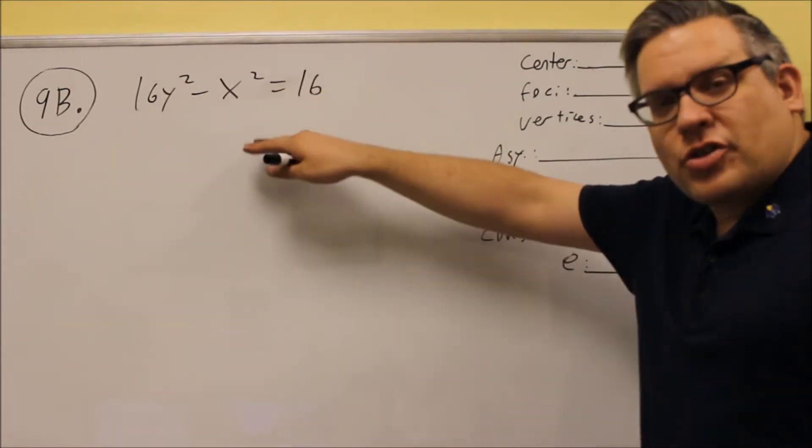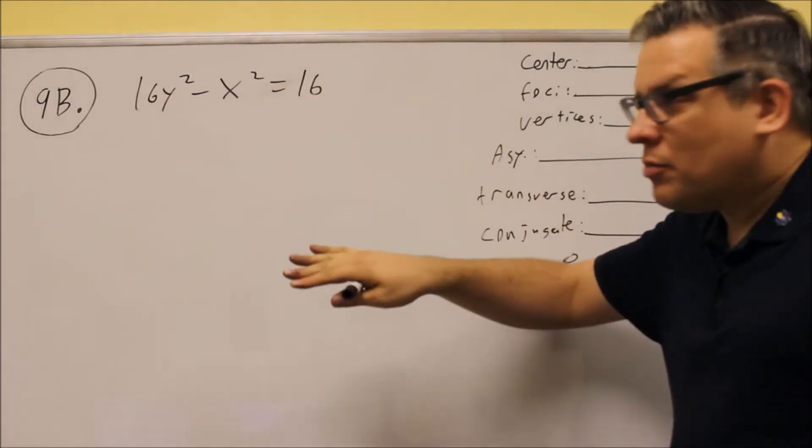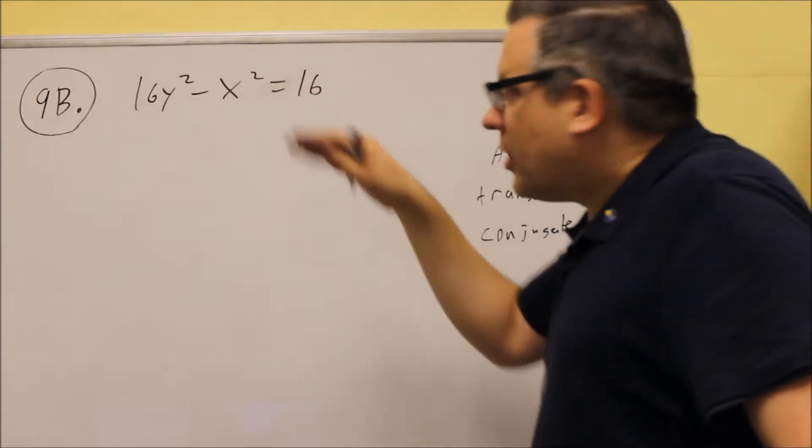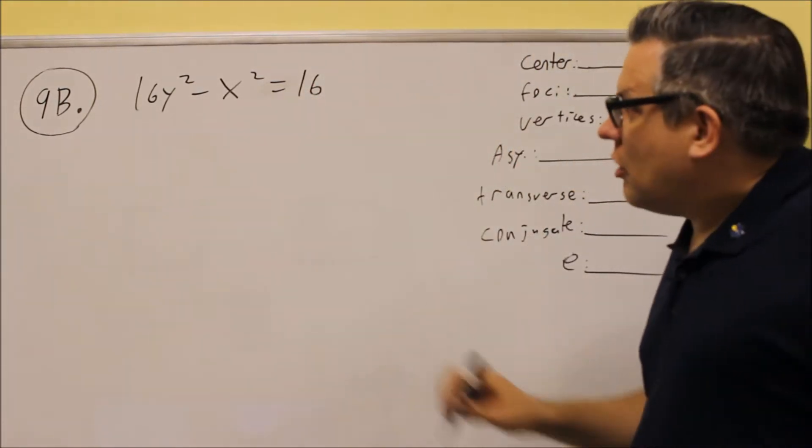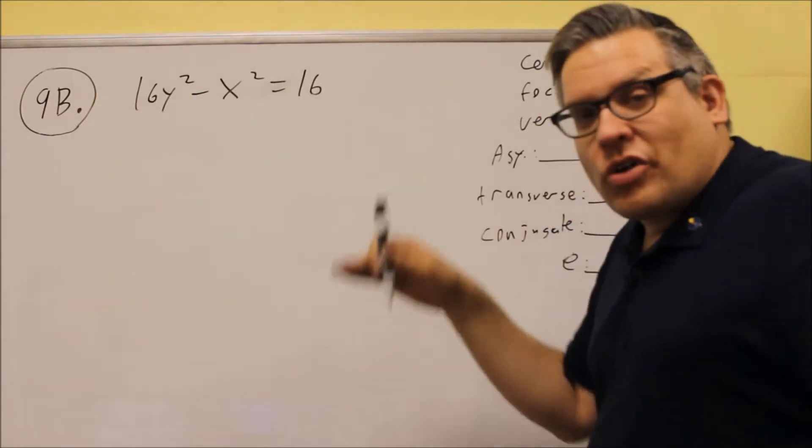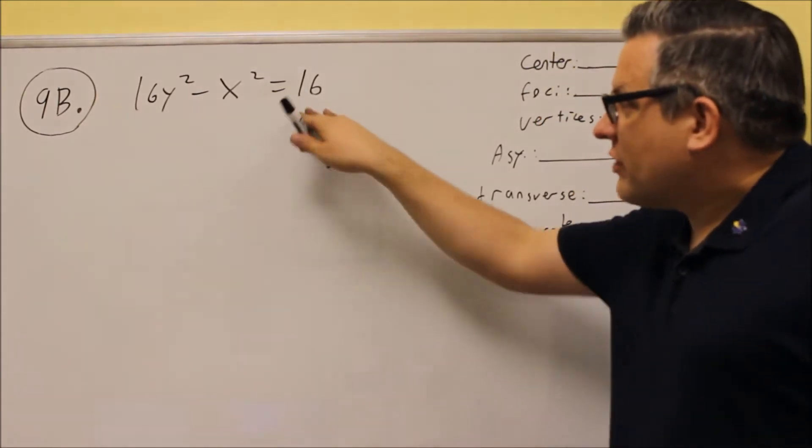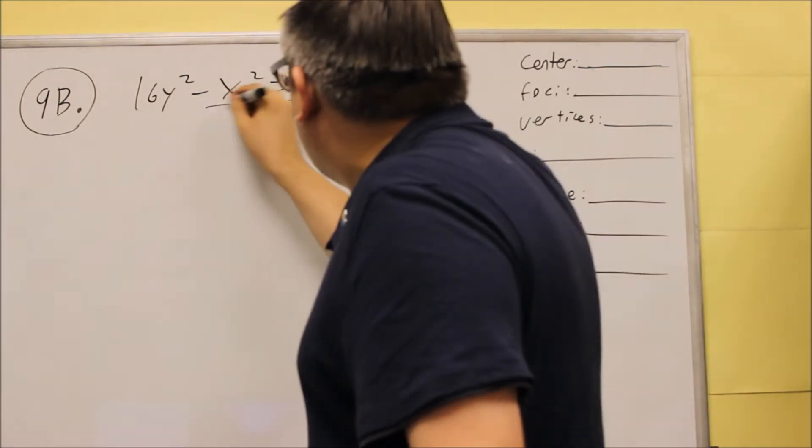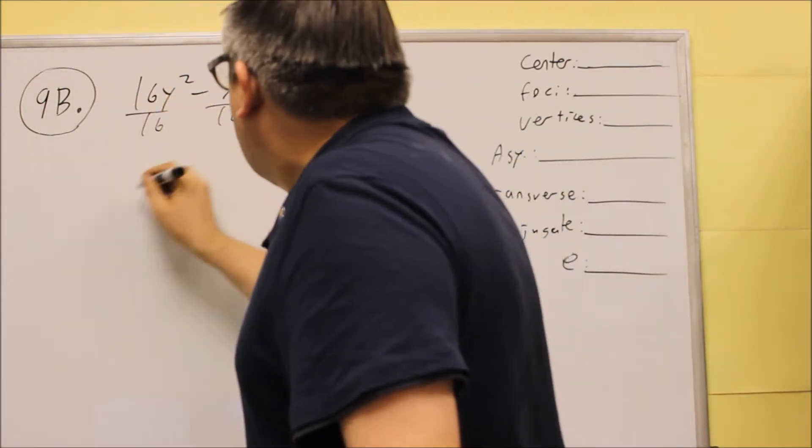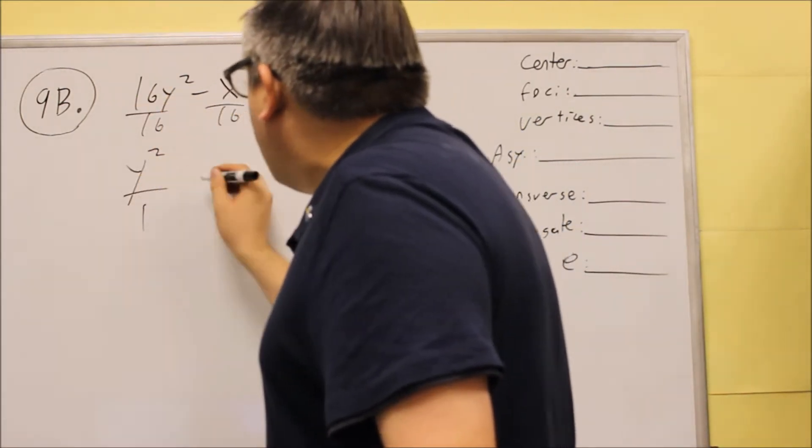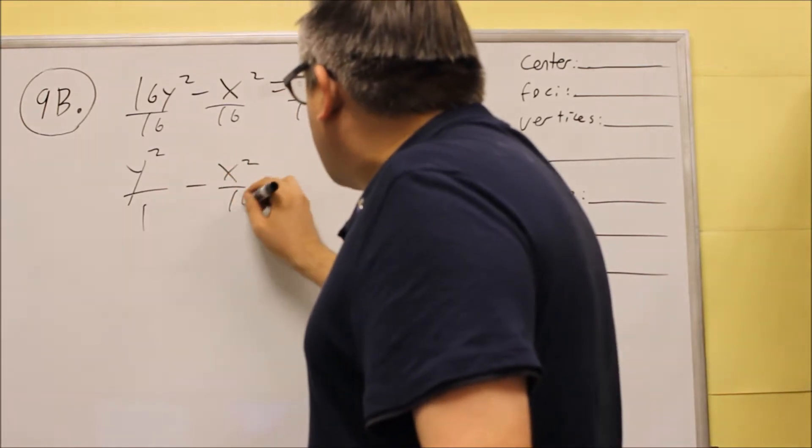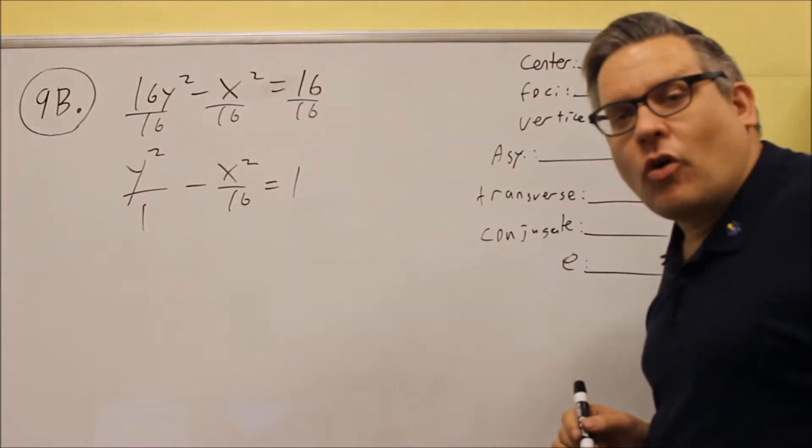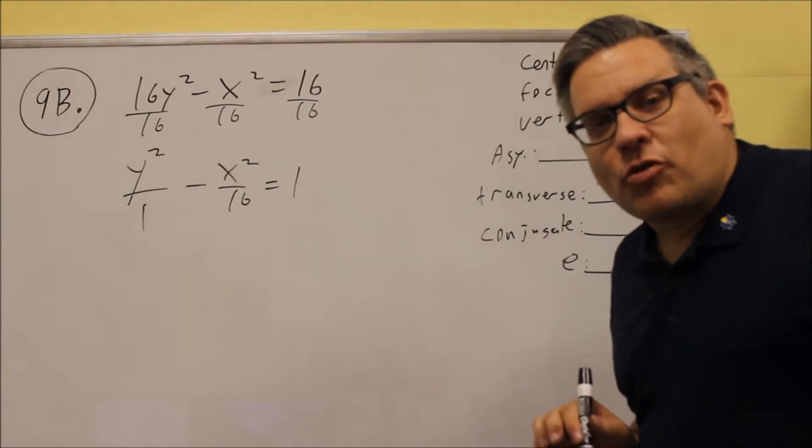For 9b, we have a little bit less work on this one than the previous one because we don't have to worry about doing complete the square on this. So on this one, we just have to get it into the proper form. We always have to have a 1 after the equal sign. So for this one, we're just going to divide everything by 16, and we'll get y squared over 1, it's x squared over 16 equals 1. So now it's in the proper form.